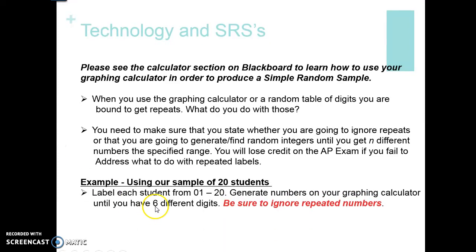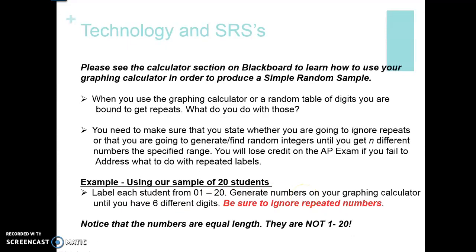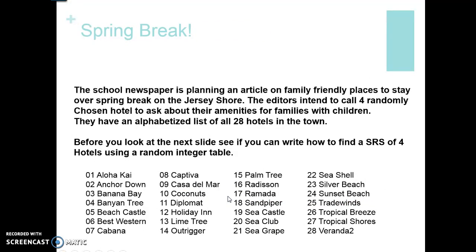For example, we're going to label each student from 01 to 20 — two digits — then generate numbers on your graphing calculator. Notice how it has six different digits; be sure to ignore repeated numbers. Make sure you understand that it's not one to 20 — it's two digits, 01 to 20.